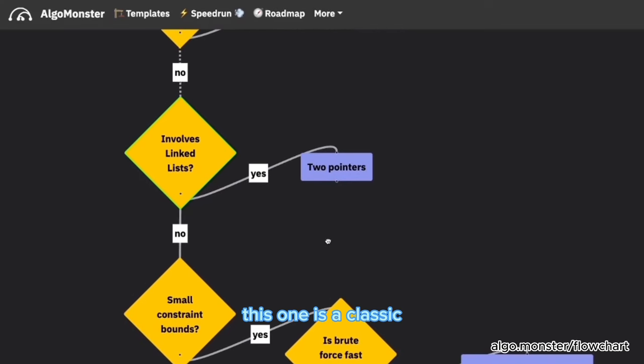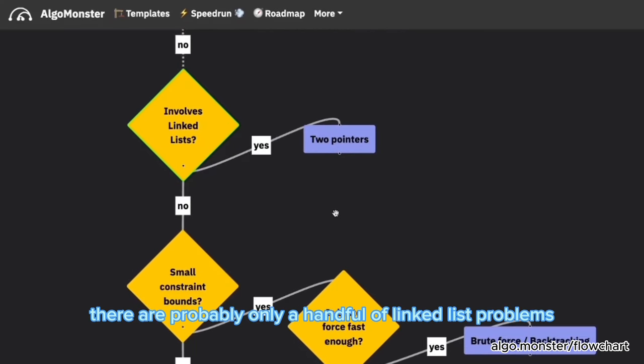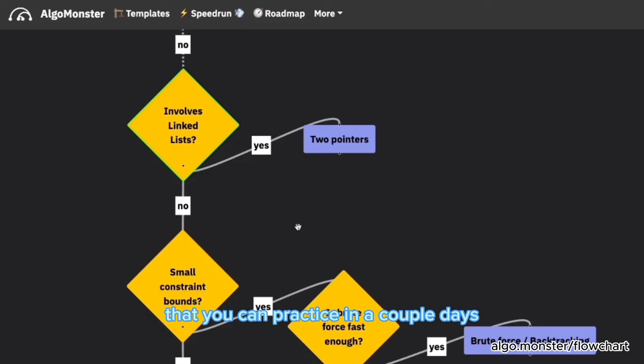Let's take a look at the next one, involve linked lists. This one is a classic. There are probably only a handful of linked list problems that you can practice in a couple of days. There is only limited variations here. How do we do this one? For a linked list problem, most of the time, they'll just test some linked list traversal by just getting a pointer and iterating through the linked list. But however, sometimes you might need to use two pointers, which is very similar to just using one pointer, using two pointers instead of one. That's how we got this idea here.